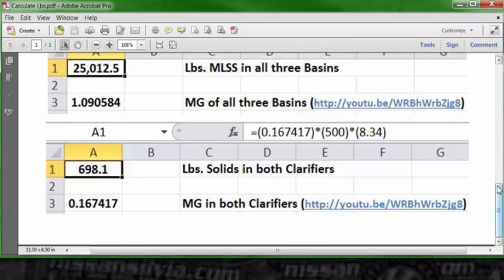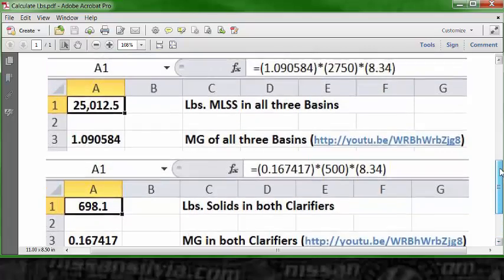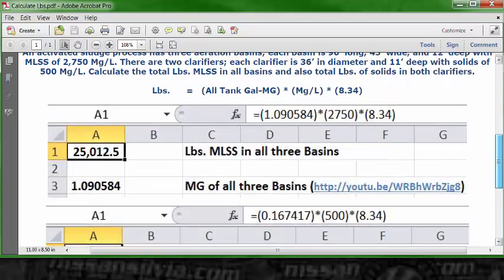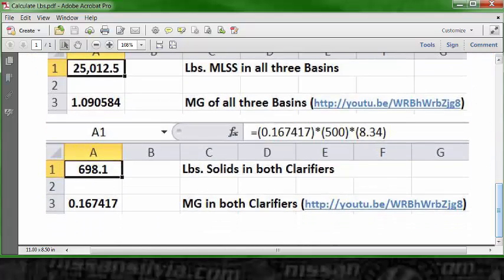decimals, you're going to have 0.167417, and that's what I'm actually going to insert into this problem. We'll go back up here and look at these dimensions. You see the clarifier is 36 feet in diameter, 11 feet deep, with a 500 mg/L concentration. So we're taking cell C1, type in